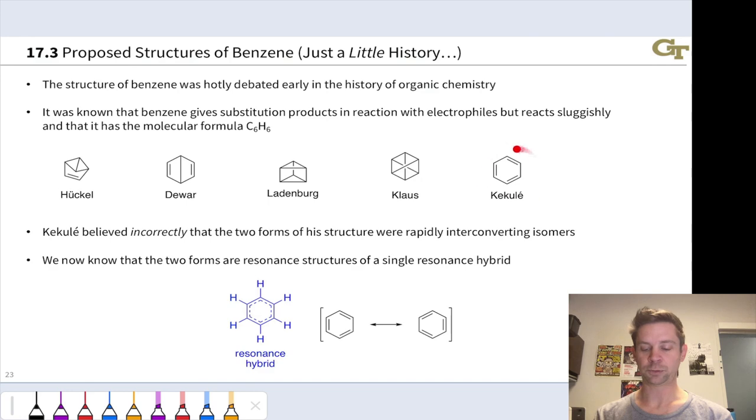Kekulé proposed a structure for benzene that is very familiar to us today, with alternating double and single bonds within the ring, hallmark of conjugation, and one hydrogen linked to each carbon in a six-membered ring structure. But Kekulé didn't get it exactly right. He understood you could draw this structure in two different ways, with the double and single bonds alternating. He believed that these corresponded to constitutional isomers.